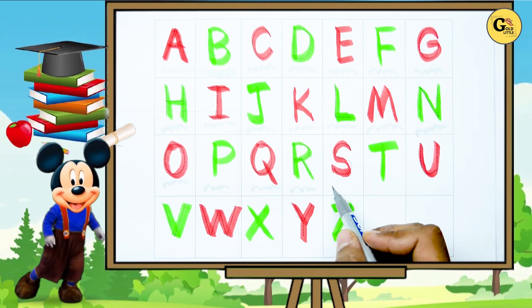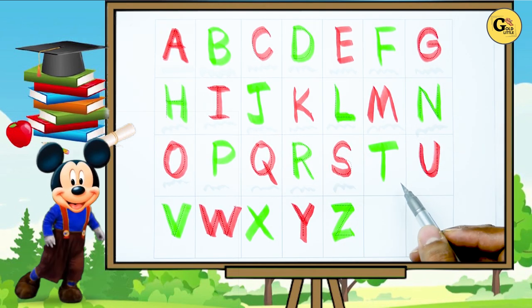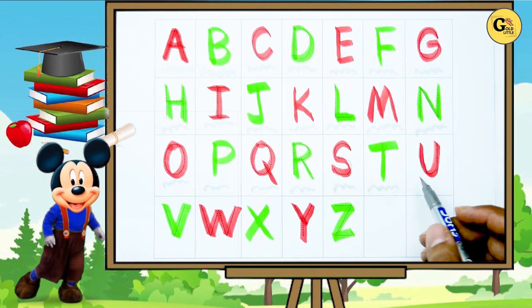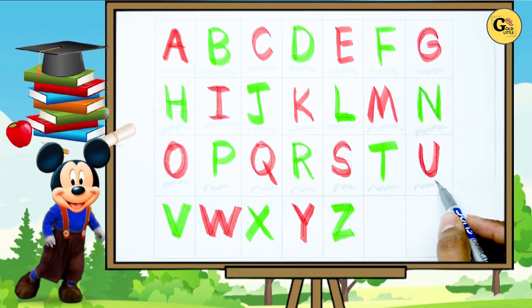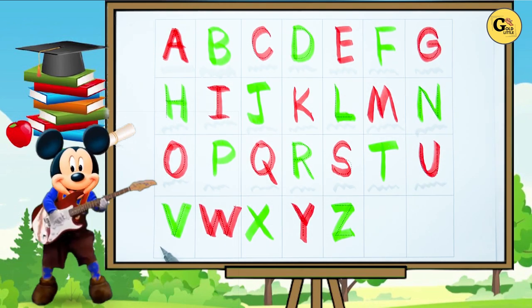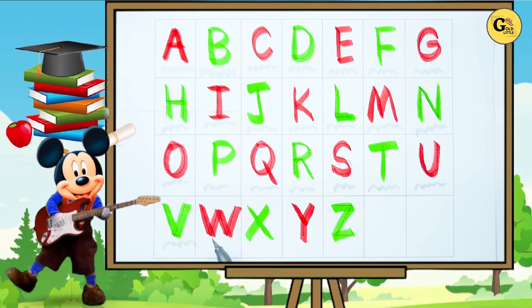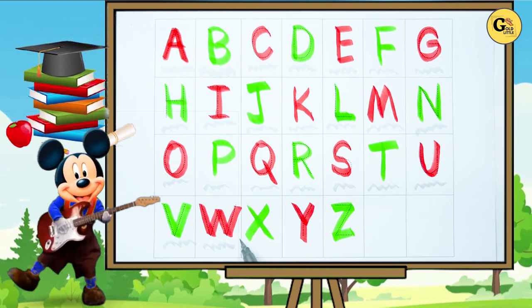S, S for sun, T, T for tiger, U, U for umbrella, V, V for van, W, W for water.